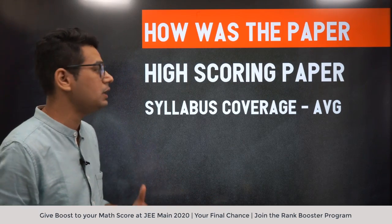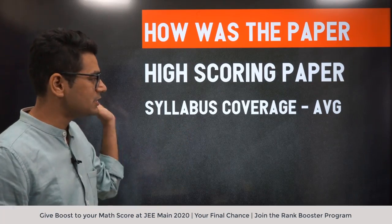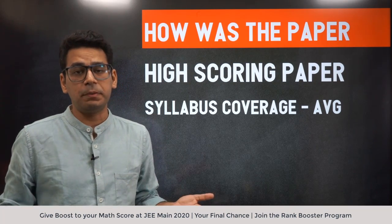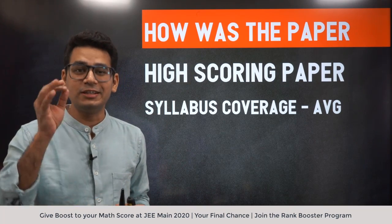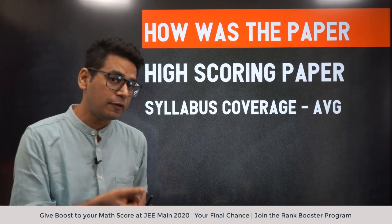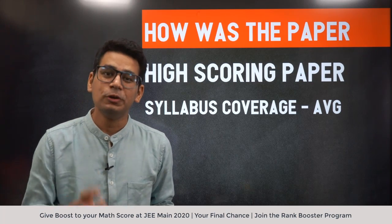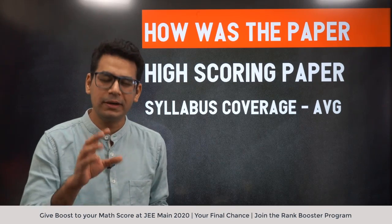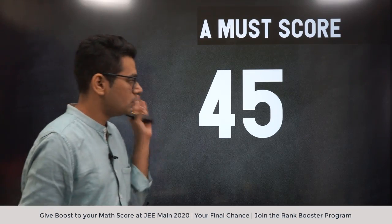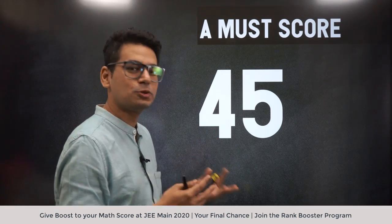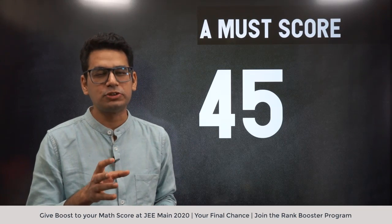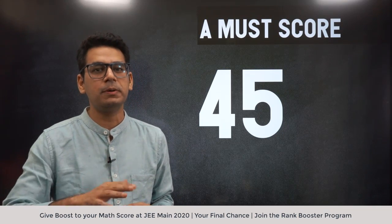How was the paper? Really high scoring. Syllabus coverage was average. You shouldn't think about what was in the paper. Every paper is a paper - you are not the decider, I am not the decider, I am not the judge. There are 25 questions and many chapters, so somewhere some chapter will miss out. But our job is to give the paper and analyze it. A must score has increased up to 45.